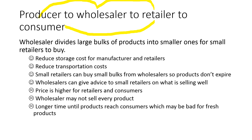Producer to wholesaler to retailer to consumer means a producer sells to a wholesaler, who sells to a retailer, who sells to the customer. Wholesalers divide large bulk products into smaller ones for smaller retailers to buy, reducing storage costs for manufacturers and retailers, and reducing transportation costs. Small retailers can buy small amounts from wholesalers. The downside is that prices are higher for retailers and consumers because each intermediary adds a markup, and it takes a long time for the product to reach the consumer, which may be bad for fresh or fast-expiring products.